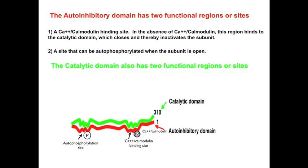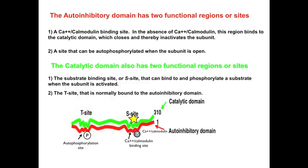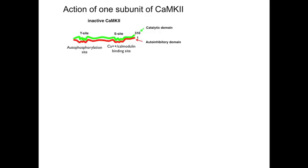The catalytic domain also has two functional sites. The first is the substrate binding site, or S-site — the actual workhorse of the subunit. It is this site that binds to and phosphorylates the substrate when the subunit is open. The second site on the catalytic domain is the T-site, which is normally bound to the autoinhibitory domain, keeping the subunit closed.